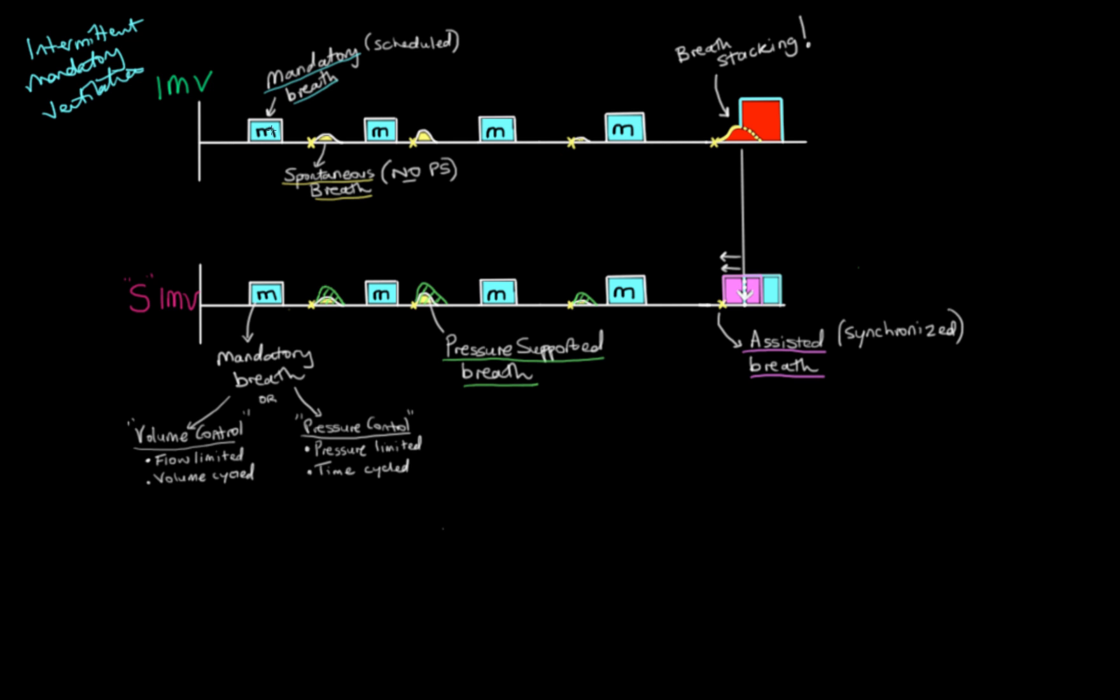That breath can be volume controlled or pressure controlled. For the sake of this explanation, it doesn't really matter. And in between those breaths, the patient can breathe. They can breathe through the circuit, but those breaths are going to be spontaneous breaths. They're not going to receive any form of help from the ventilator on those breaths in between the mandatory breaths.